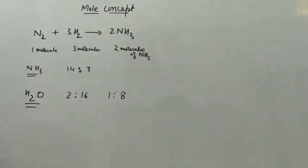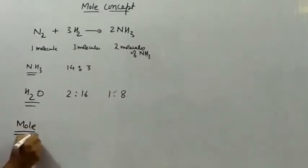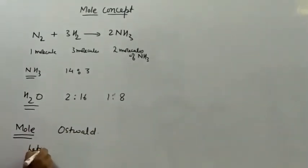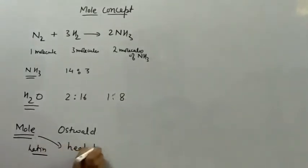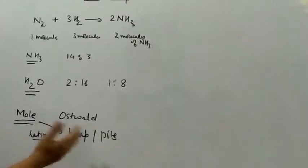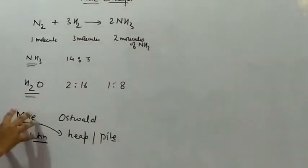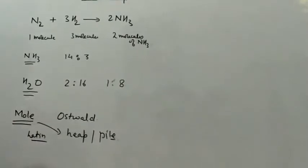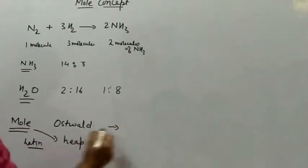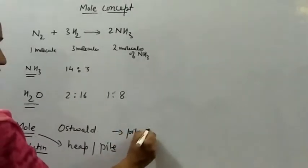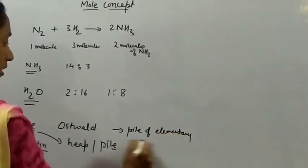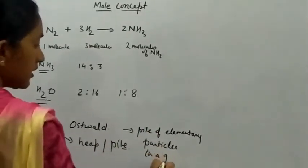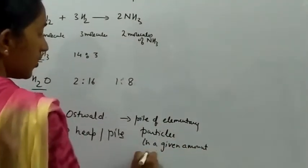To resolve this problem of counting the number of molecules and atoms, the word 'mole' was introduced. This mole word was actually introduced by Ostwald. In Latin, 'mole' means a heap or a pile. So we can say that the mole is a pile of a substance — a number of elementary particles in a given substance. Ostwald stated that the mole is related with the pile of elementary particles, which can be atoms, molecules, or ions in a given amount of substance.